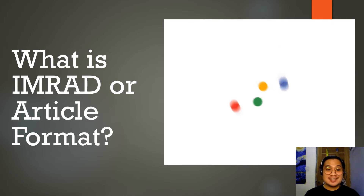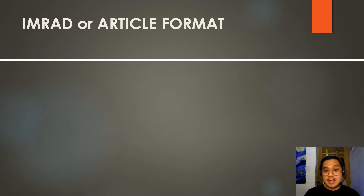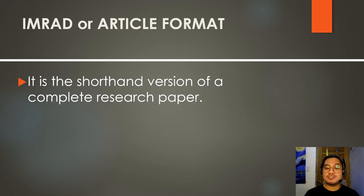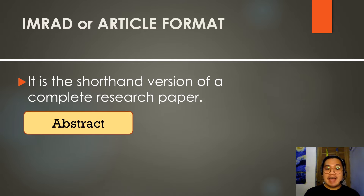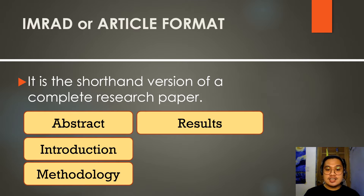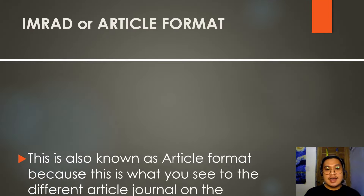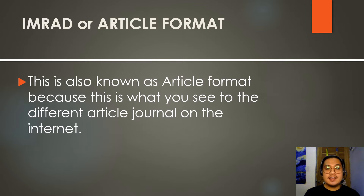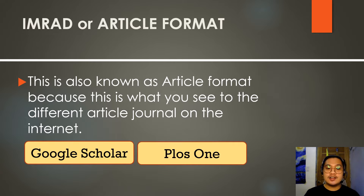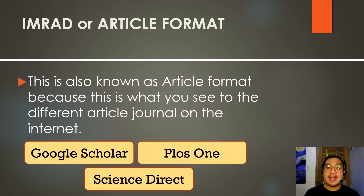Our next point of concern is the IMRAD or article format. IMRAD is the shorthand version of the complete research paper, composed only of the following parts: the abstract, introduction, methodology, results, discussion, and recommendations. It is called IMRAD because it focuses only on those components. IMRAD is also known as article format because this is what you see in different journal articles on the internet — such as Google Scholar, PLOS ONE, and Science Direct — which are sources for research articles essential for your paper.